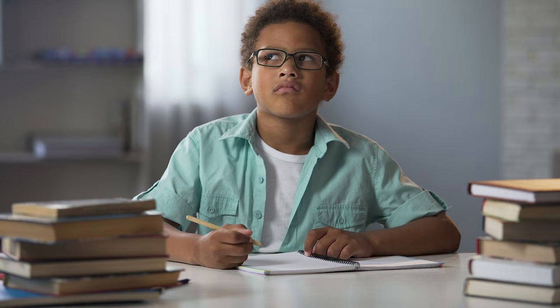Here is the basic workflow for automated document processing. You take in hundreds of documents per month — these could be sent from some external organization or documents you generate internally. After that, there's usually a process to find the right section, though this isn't necessary if the documents are really small, like an email or a chat log.